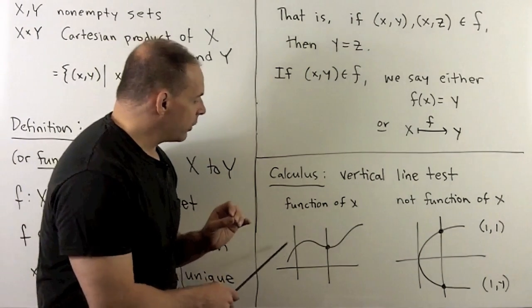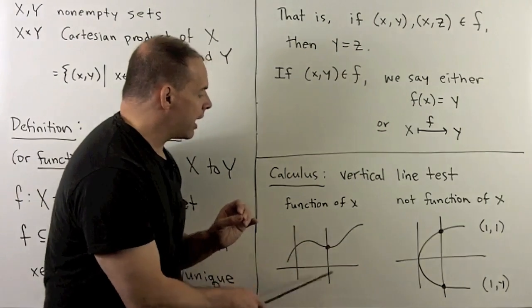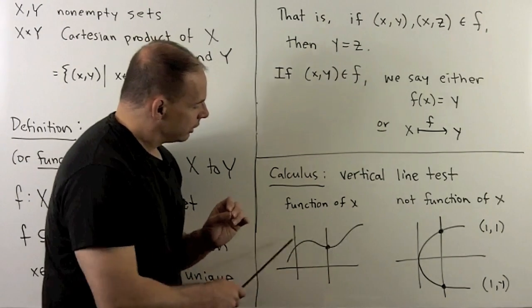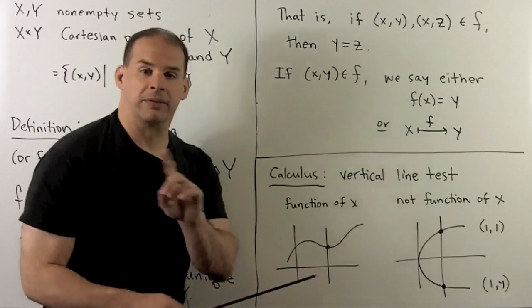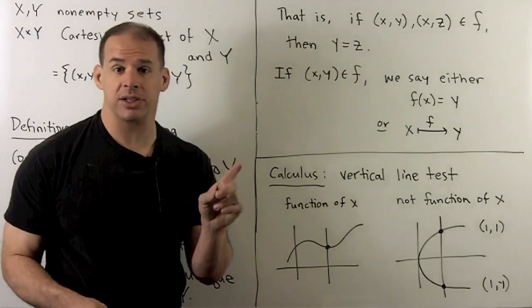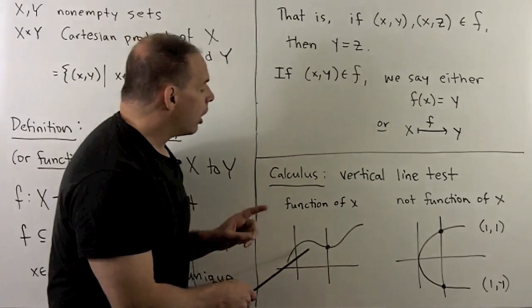So, for instance, here we have a function. If I take any vertical line, we cut in one point. We could cut in no points, but then we have to fix the domain, what we're calling x.